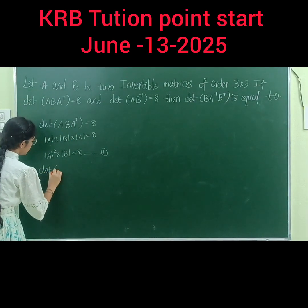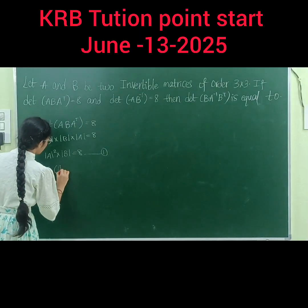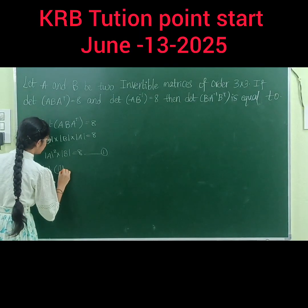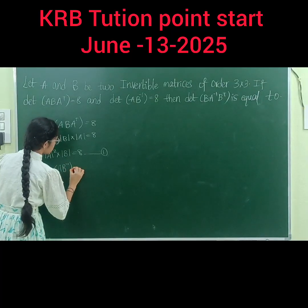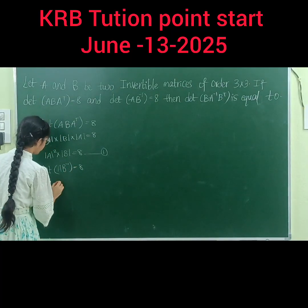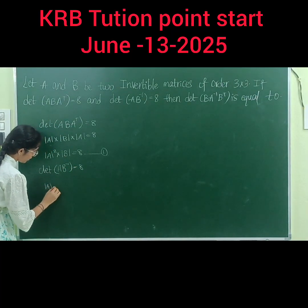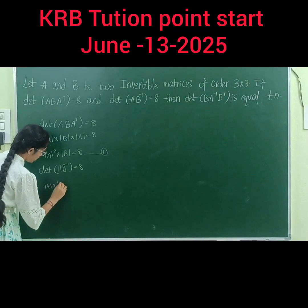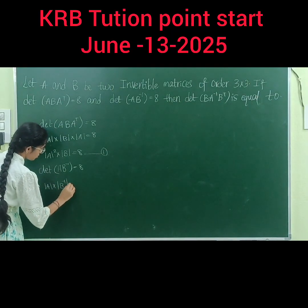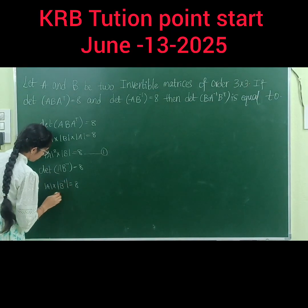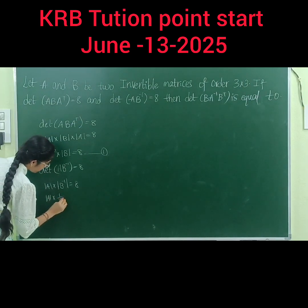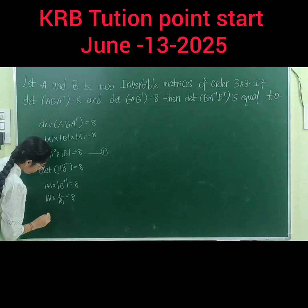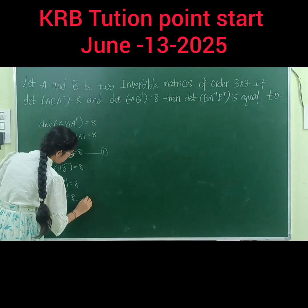And |A| into |A inverse| is equal to 8. That gives |A| · |A⁻¹| = 8, so |B| = 8. This is equation 2.